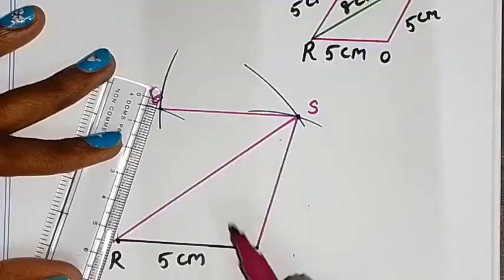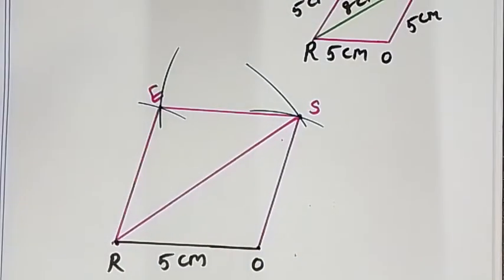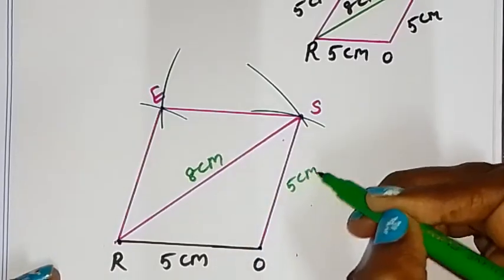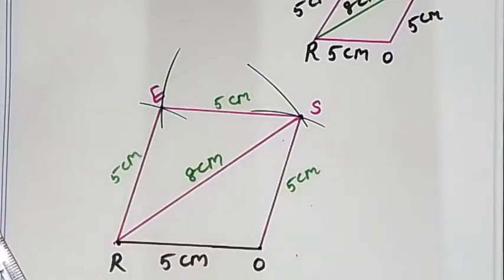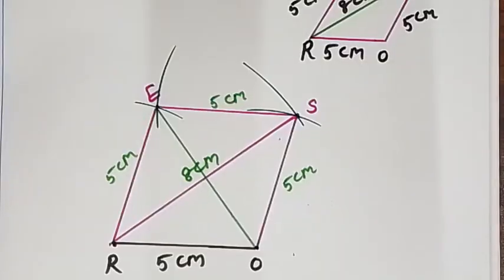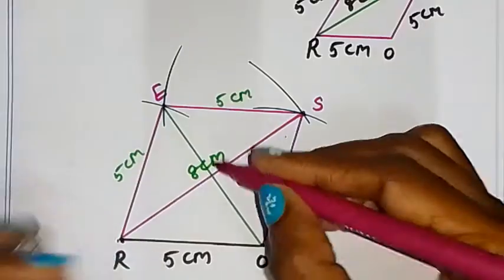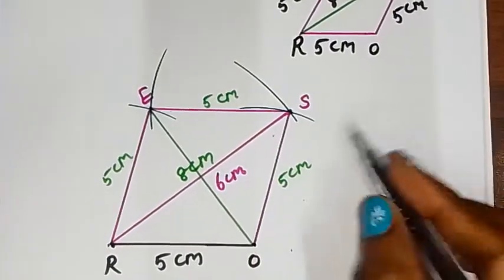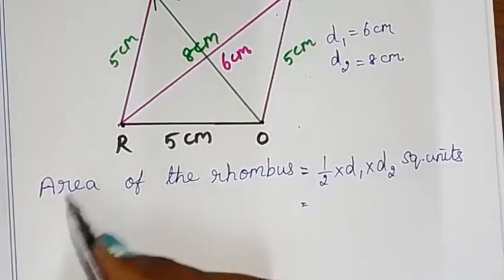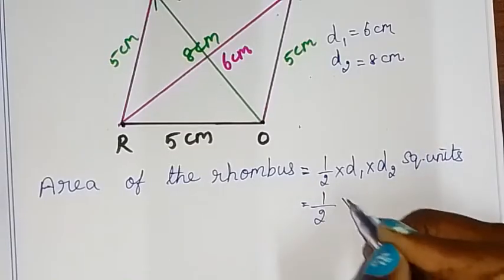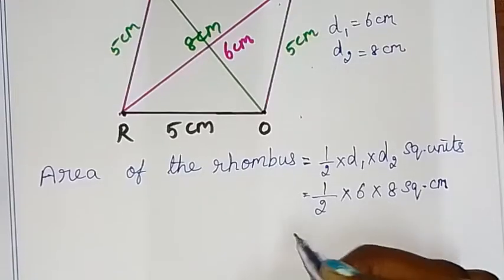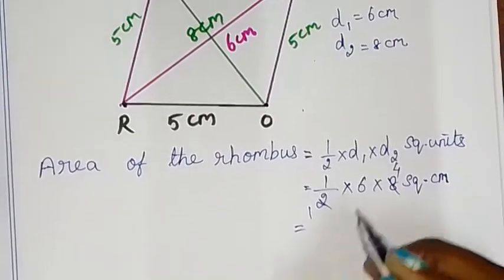Now we complete the rhombus construction and find the area using the diagonal measurements: diagonal 1 is 6 cm and diagonal 2 is 8 cm. The area of a rhombus is equal to half into D1 into D2 square units. That is equal to half into 6 into 8 square centimeter. Simplifying: half of 8 is 4, and 6 fours are 24 square centimeters.